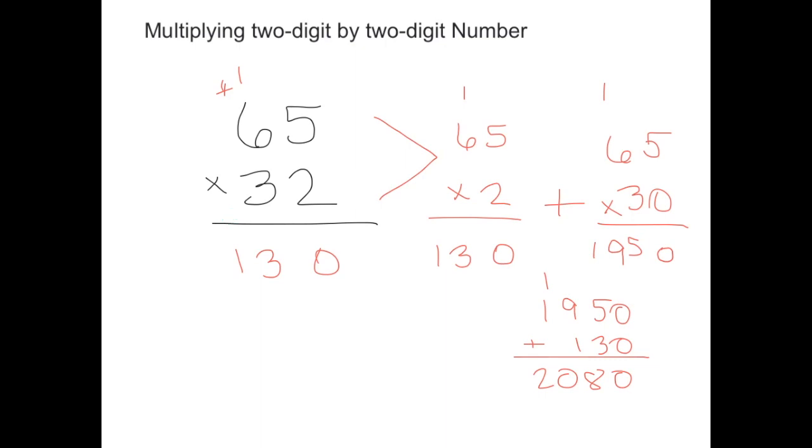Now in order to multiply by a digit that's in the tens place, we have to first put a zero under the first product we got when we multiplied two times sixty-five.